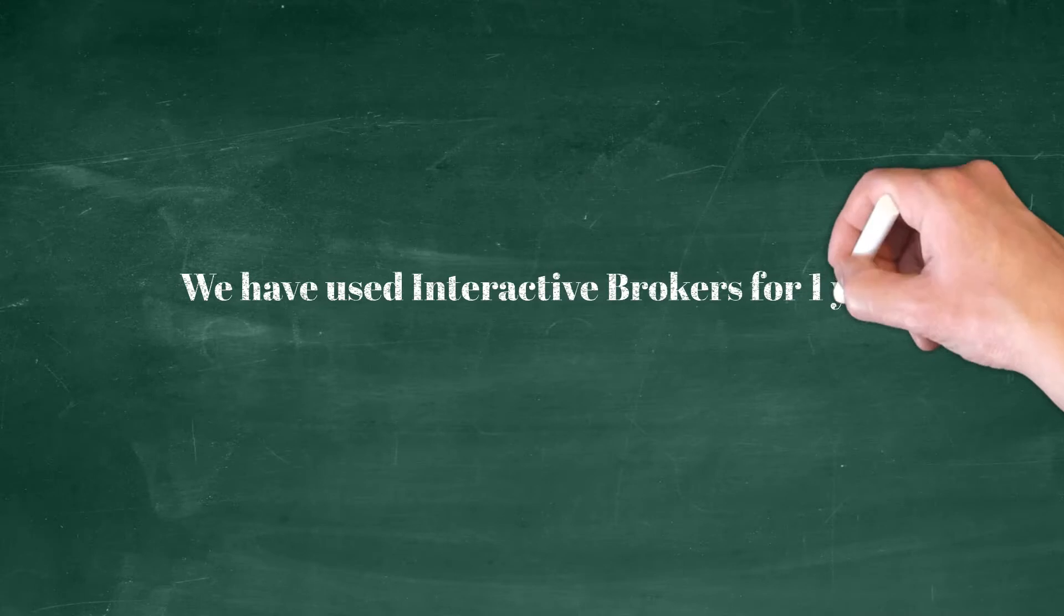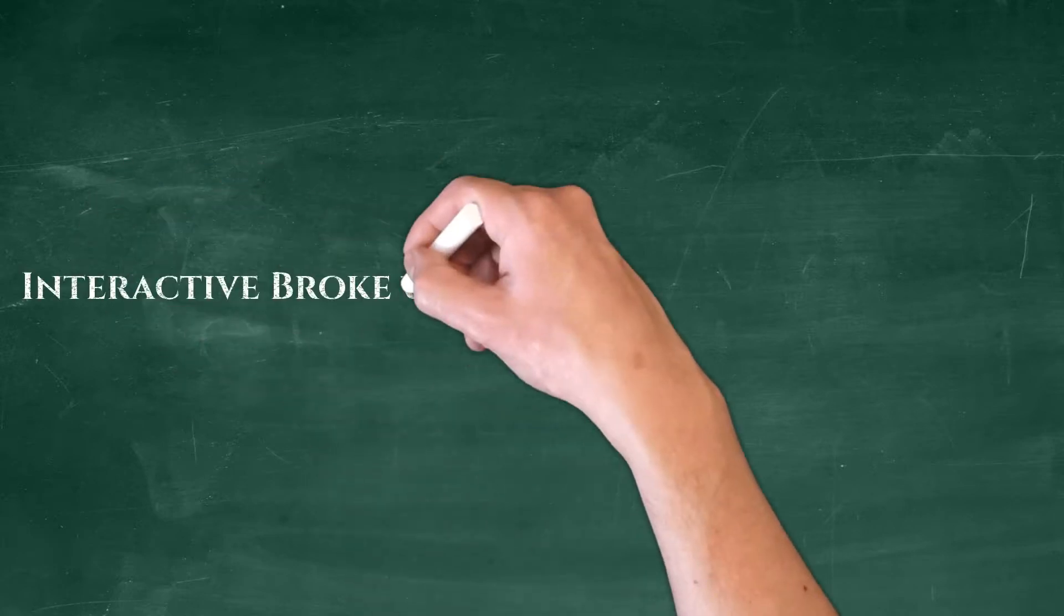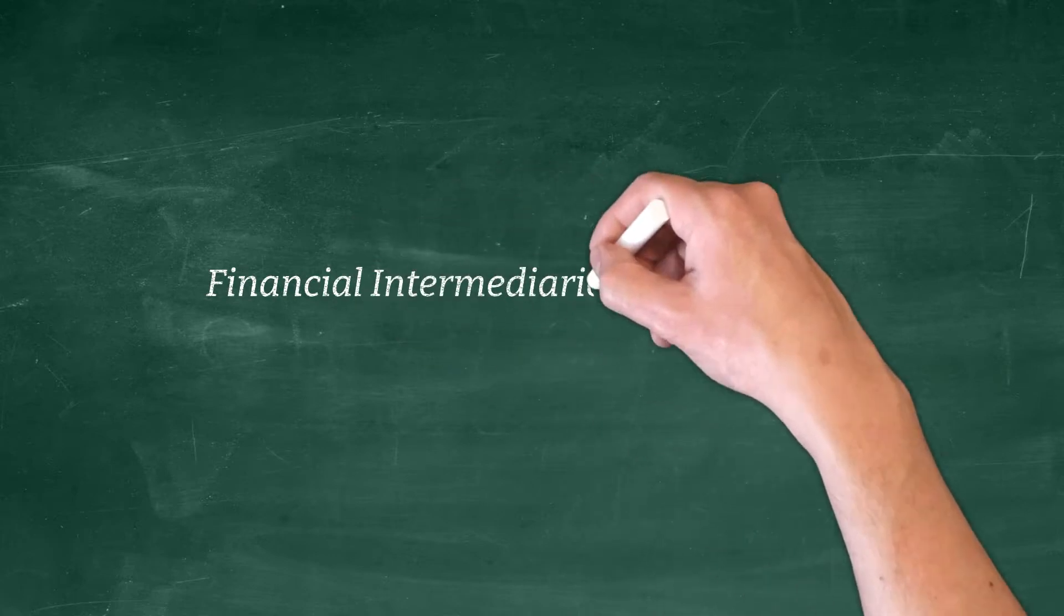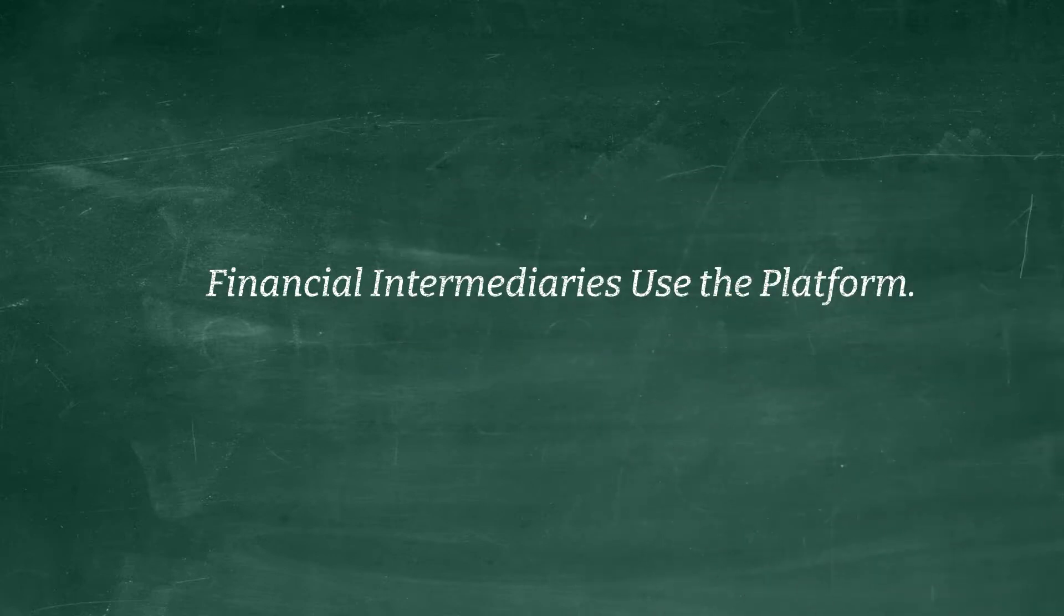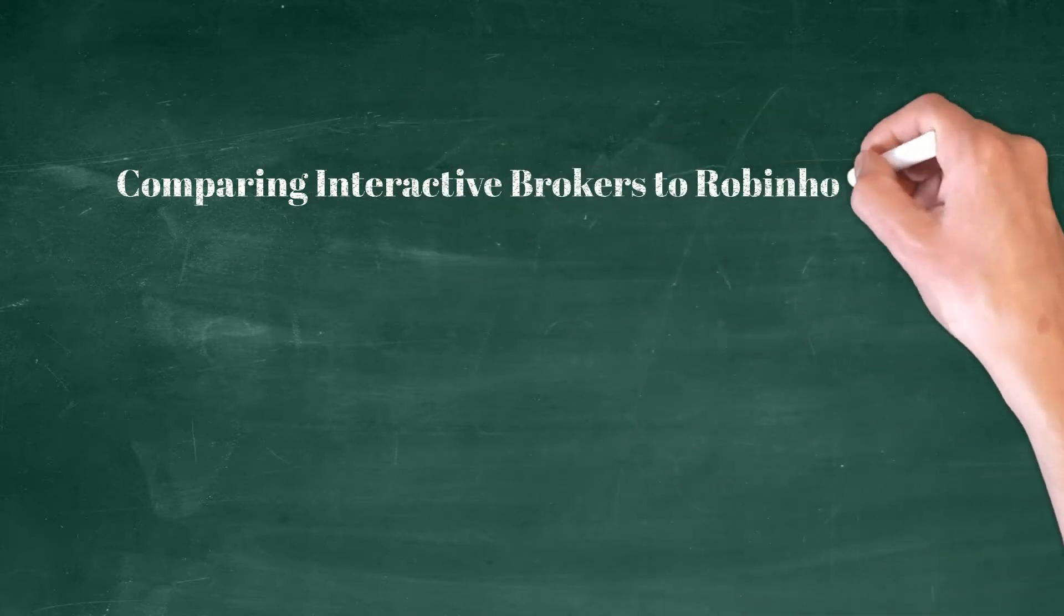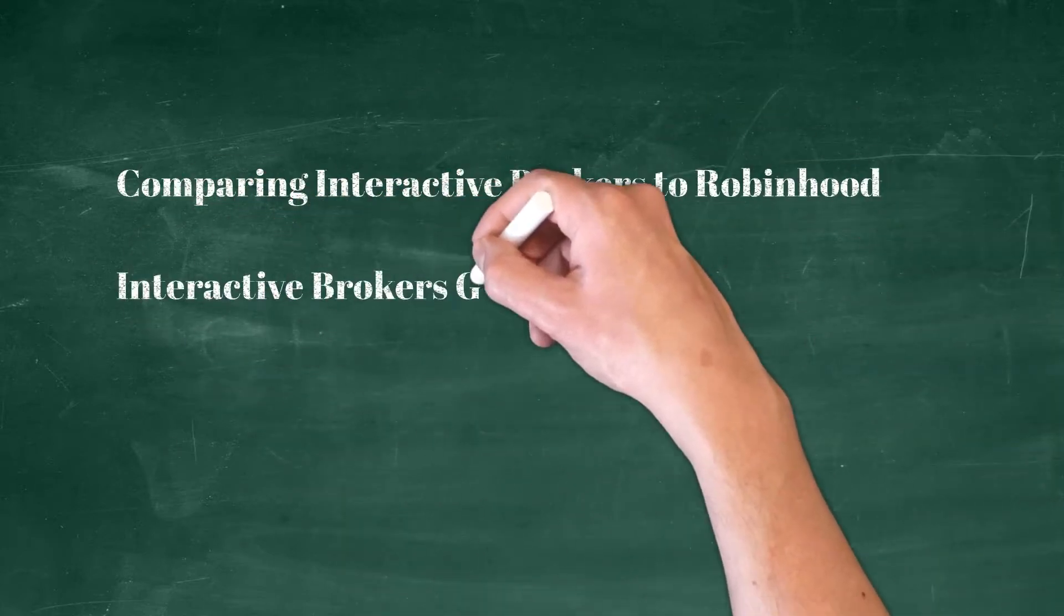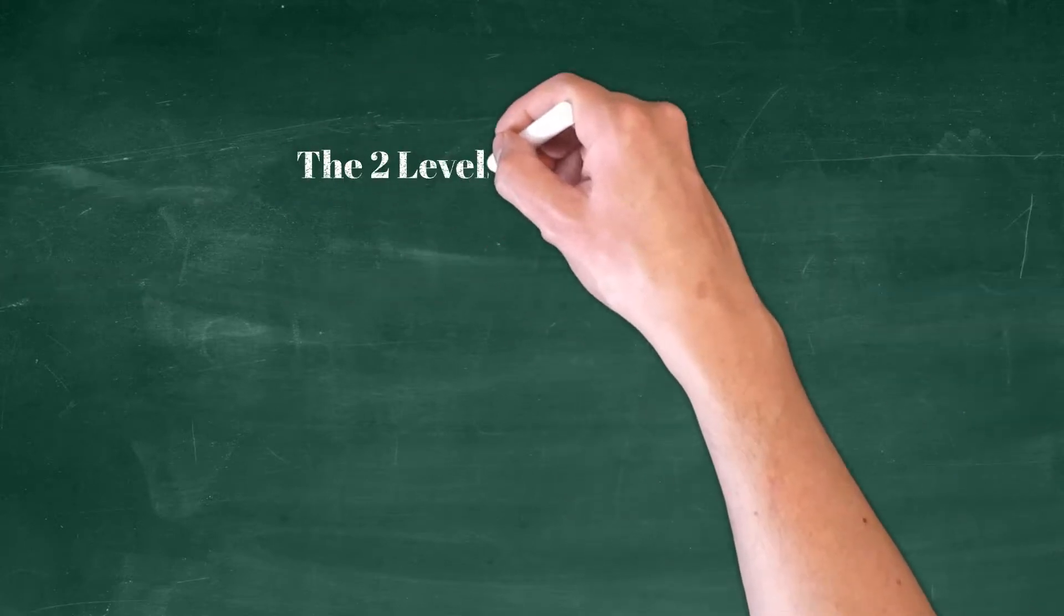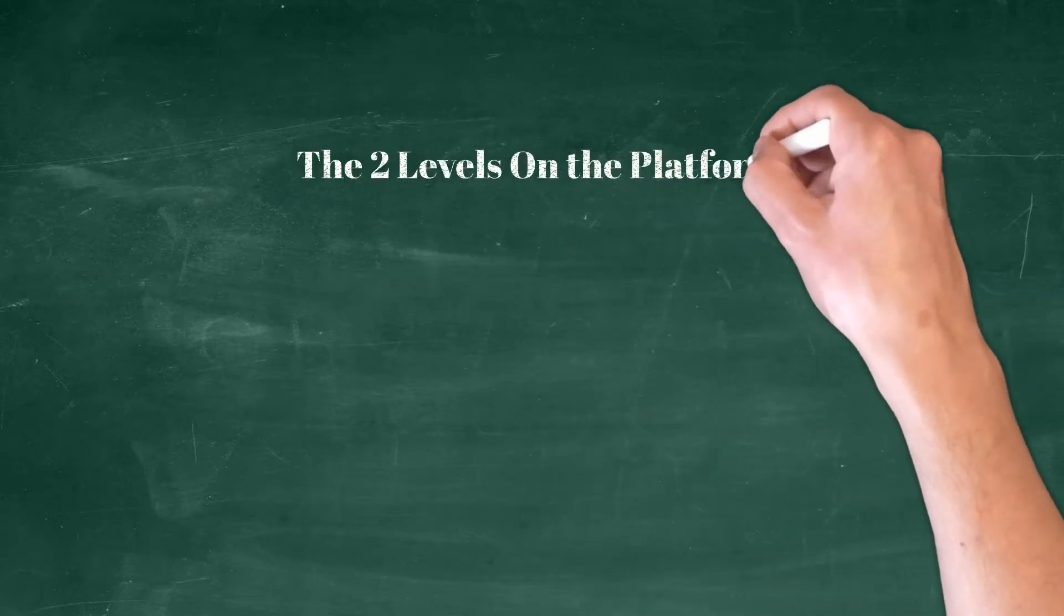We have some experience with their platform. First, Interactive Brokers is a more professional platform. Many professional investors, such as hedge funds and investment intermediaries use Interactive Brokers as their trading platform. When comparing Interactive Brokers to a platform such as Robinhood, Interactive Brokers gives you a no-frills vibe. There are two levels on the Interactive Brokers platform, Lite and Pro.